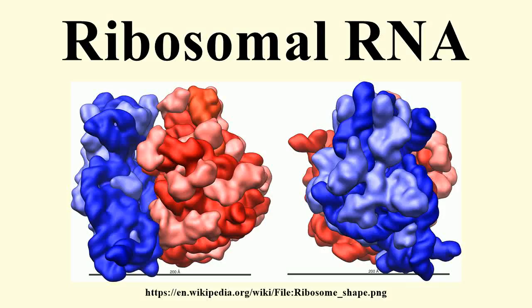In molecular biology, ribosomal ribonucleic acid is the RNA component of the ribosome, and is essential for protein synthesis in all living organisms. It constitutes the predominant material within the ribosome, which is approximately 60% rRNA and 40% protein by weight. Ribosomes contain two major rRNAs and 50 or more proteins. The ribosomal RNAs form two subunits, the large subunit and small subunit. The large subunit rRNA acts as a ribozyme, catalyzing peptide bond formation.